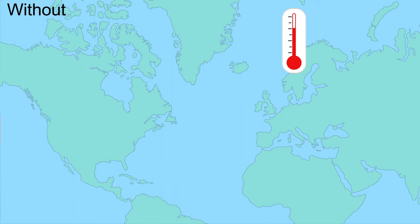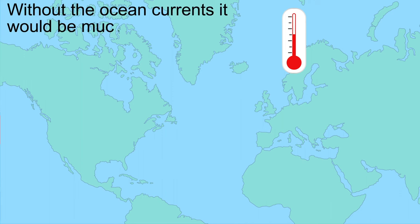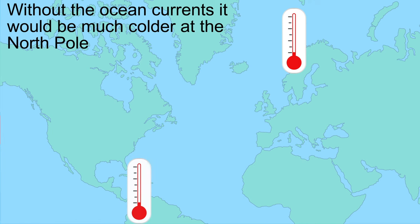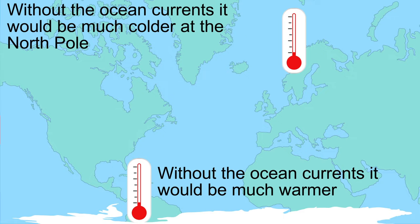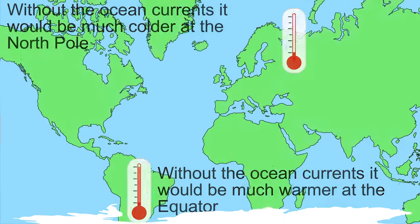Without the ocean currents, much less heat would be moved from the equator towards the North Pole, and it would therefore be much cooler at the North Pole. If there were no ocean currents, the heat would not be removed from the equator and it would become warmer at the equator.